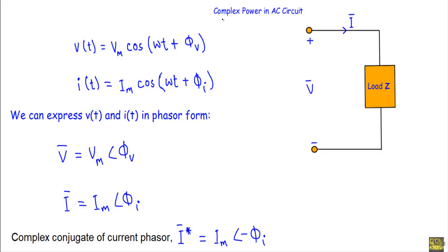In this video I will talk about the complex power in an AC circuit and show you the formula derivation. Considerable efforts have been expanded over the years to express the power relation as simply as possible. Power engineers have coined the term complex power, which they use to find the total effect of parallel loads in an AC circuit. Complex power is important in power analysis because it contains all the information related to the power absorbed in a given load.